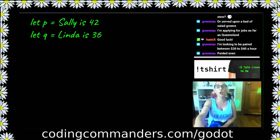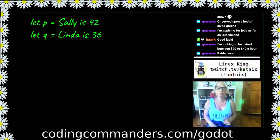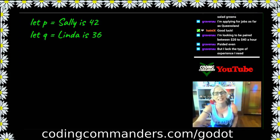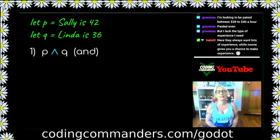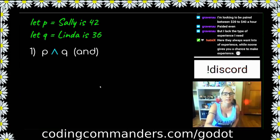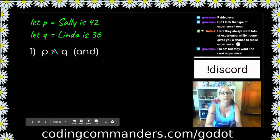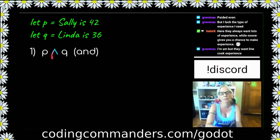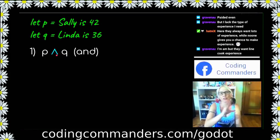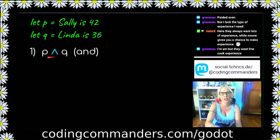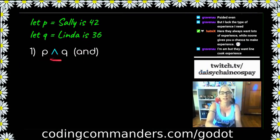Now let's talk notation. Let's do an example. We're going to let p equals Sally is 42, and let q equal Linda is 36. P and q. This symbol here in mathematics means and. It's like the ampersand ampersand in GDScript. P and q. In order for this statement to be true, both p and q have to be true. So in order for this to be true, Sally has to be 42, and Linda has to be 36. If either one of them lied their age, this is going to be false.